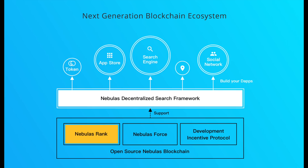Nebulas Rank is an algorithm that allows easy access to valuable blockchain data — it ranks addresses, smart contracts, and other entities on the blockchain, just like Google ranks data. The second feature is how the blockchain can upgrade without needing to fork. The third is the Developer Incentive Protocol, where developers get positive feedback, earn a high ranking, and get rewarded with tokens on the network.